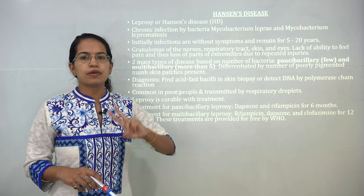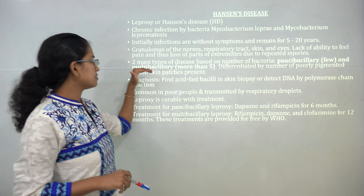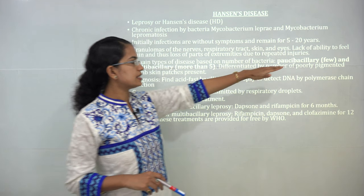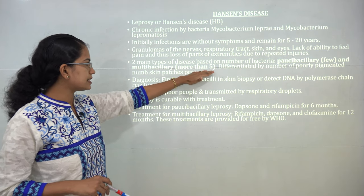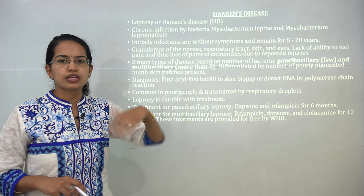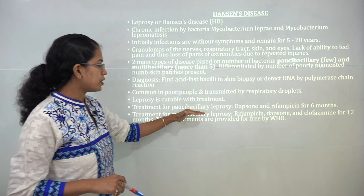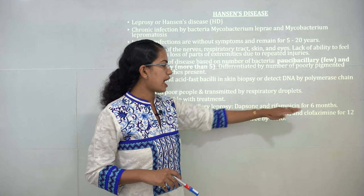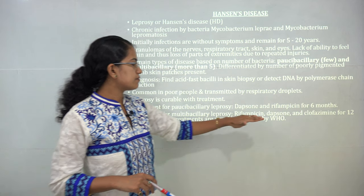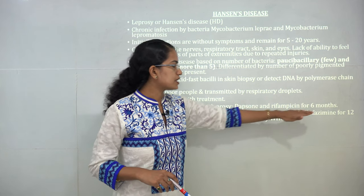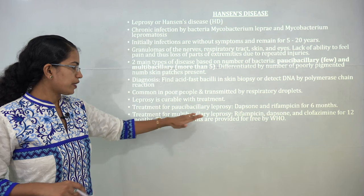This drug therapy works for two bacterial types: paucibacillary and multibacillary. Under paucibacillary, few bacteria are present; under multibacillary, there are more than five bacteria. The treatment differs for both. For paucibacillary it is mainly dapsone and rifampicin; for multibacillary it is rifampicin, dapsone, and clofazimine for 12 months.